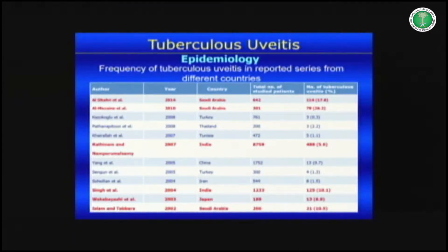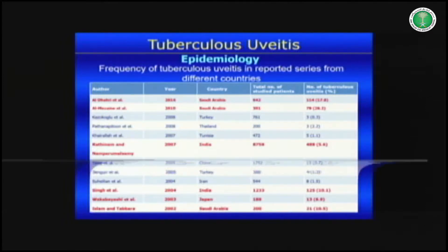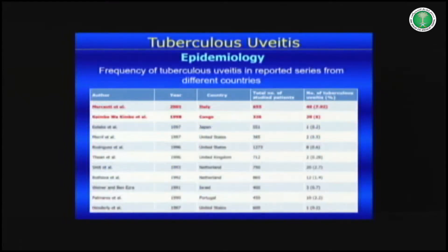In a study from Saudi Arabia — our paper — the frequency was 17.8% among a large series of patients with uveitis. Another paper from Saudi Arabia, also from our institute, showed 26%, but these were cases admitted to treat uveitis. From India, 5.6%; another study from India, 10%; from Japan, about 7%; from another Saudi Arabian institute, 10%; from Italy, 7%; and from Congo, about 6%. There are large variations related to the epidemiology of uveitis in different countries.